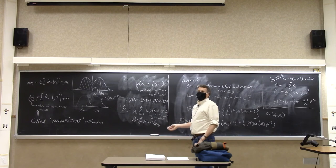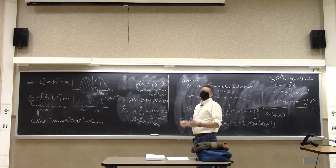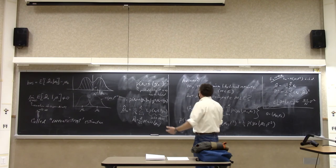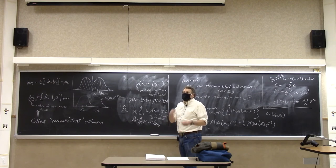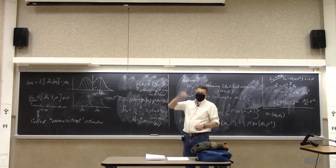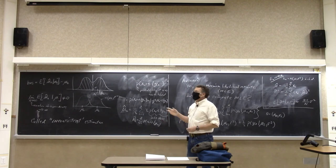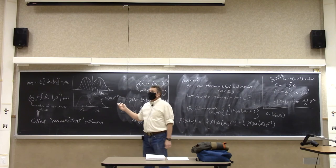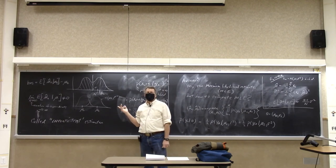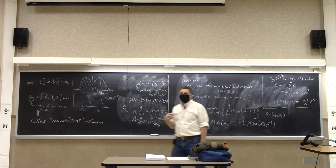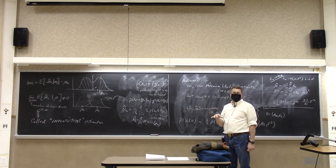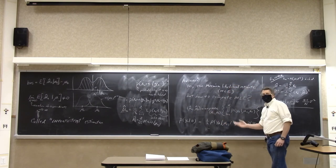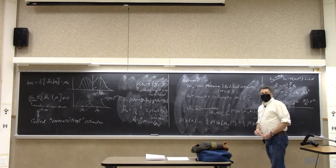This is what the EM algorithm solves. It solves it in a very beautiful way using surrogate functions. After you derive all the surrogate functions and the machinery, what ends up happening is that you can prove the algorithm converges to a local minimum of the maximum likelihood estimate. It's a surrogate function for the likelihood, so with each update it reduces the likelihood until you get to a local minimum. It's a way of computing a maximum likelihood estimator for this really hard problem.